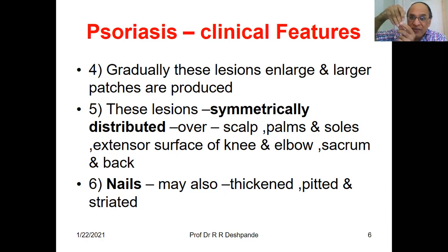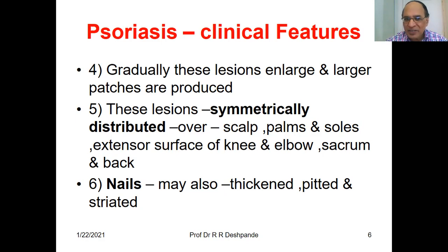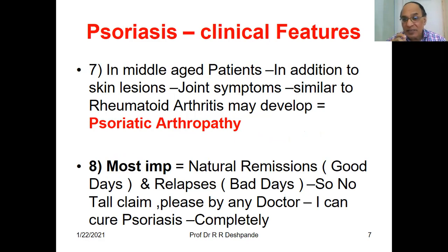Psoriasis can affect your nails as well — they become thickened, pitted, and striated. In middle-aged patients, in addition to the skin problem, there may be joint pains very similar to rheumatoid arthritis, but caused by psoriasis. This is called psoriatic arthropathy.